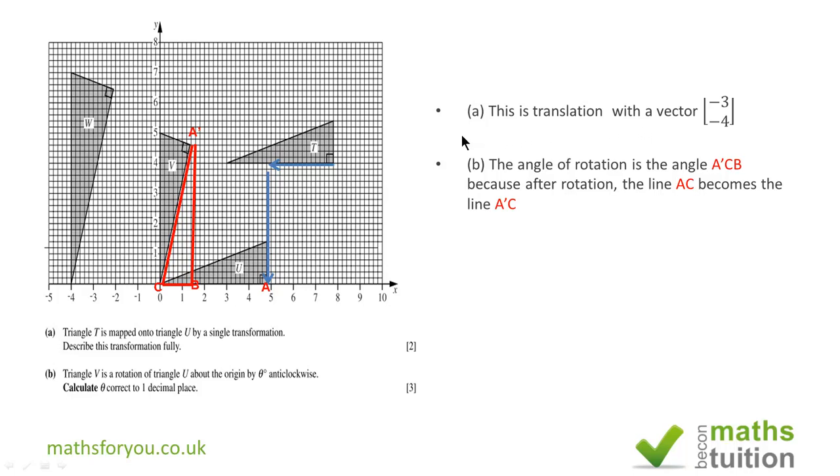For part B, we are supposed to find the angle of rotation theta. The point A in triangle U maps to the point A prime in triangle V. So, we need to find the angle A prime Cb.